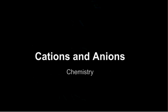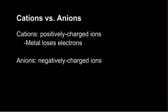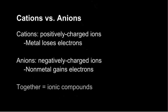Hi, this is Emily and today let's learn about cations and anions. Cations are positively charged ions and they form when metals lose their electrons. Anions are negatively charged ions and they form when nonmetals gain electrons. Together, cations and anions form ionic compounds.